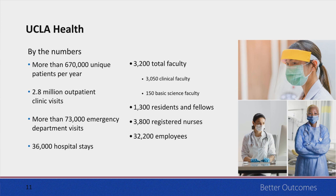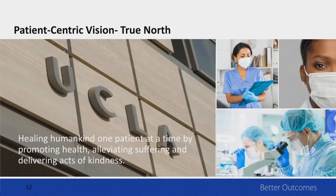I want to share a little bit about UCLA Health so you can understand the scope and vision we were working with. We have two campuses, over 800 beds, and we see a large number of patients. Each staff member's workflow was changed by changing our model, and we had a lot of their feedback as we developed our process. Our patient-centric vision is our true north: the vision for UCLA Health is healing humankind one patient at a time by promoting health, alleviating suffering, and delivering acts of kindness. Every decision we made was filtered through this lens.